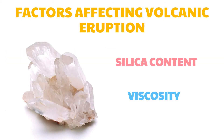Next, let's look at how the composition of magma affects its viscosity. Magmas with high silica content are more viscous than those with low silica content. The magma that contains less silica is relatively fluid and travels far before solidifying.